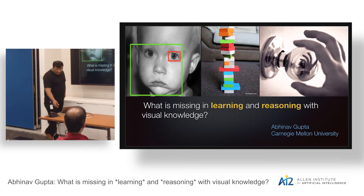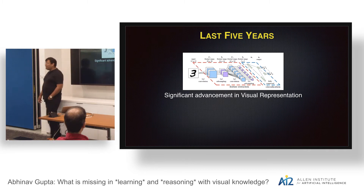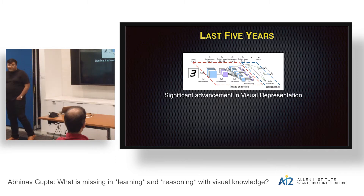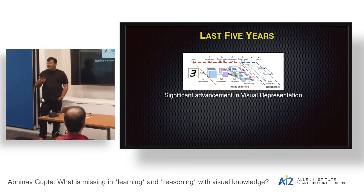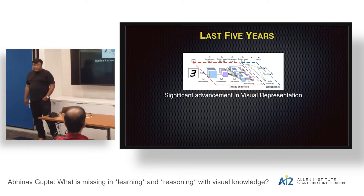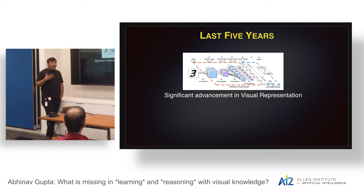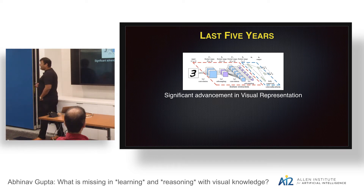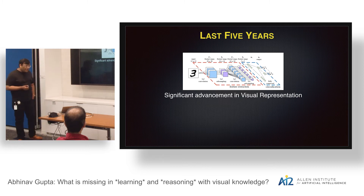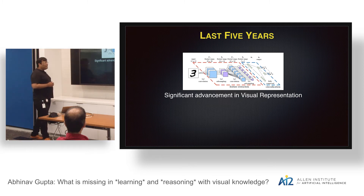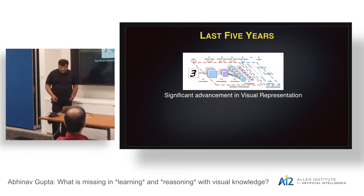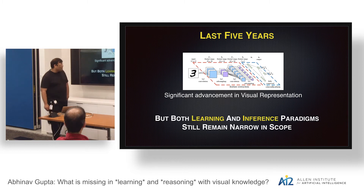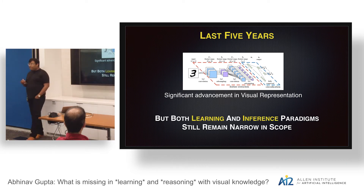Since all of you are at AI2, I'm sure you've heard the story for the last five years of what's happening in the field of AI. We are seeing significant advancement in visual representation thanks to deep learning and convolutional neural networks — amazing results that when I started as a PhD student, I didn't think I'd see in my lifetime. But if you compare with what humans do, both learning and inference in the current paradigm are still very narrow in scope.